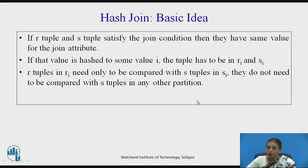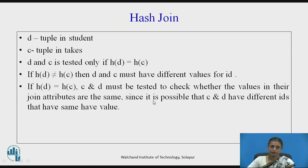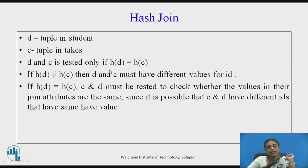Tuples in r_i need only to be compared with s tuples in s_i. For example, r1 will be matched only with s1. So if d is a tuple in student and c is a tuple in text, d and c are tested if and only if h(d) equals h(c), i.e., the hash value of d equals the hash value of c.